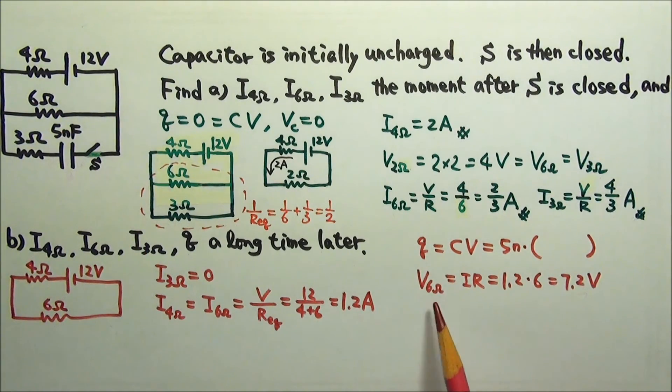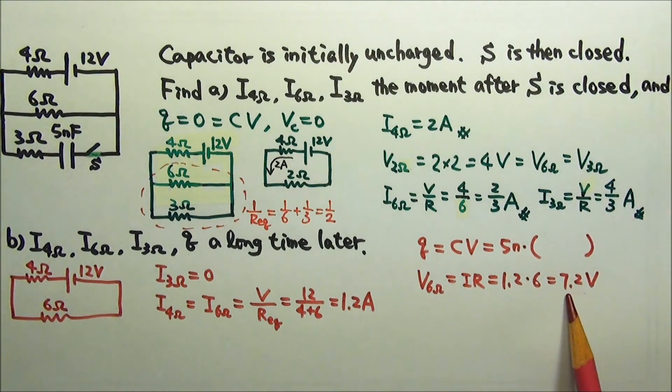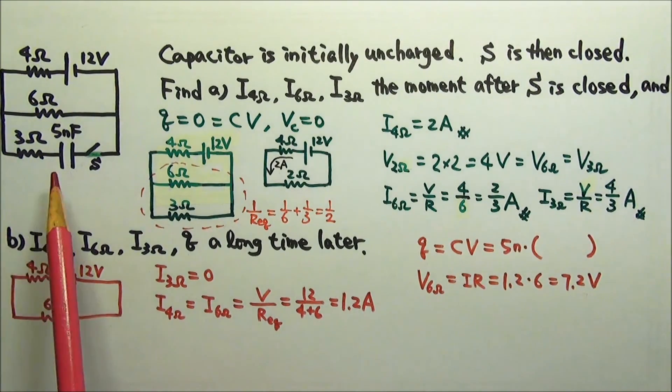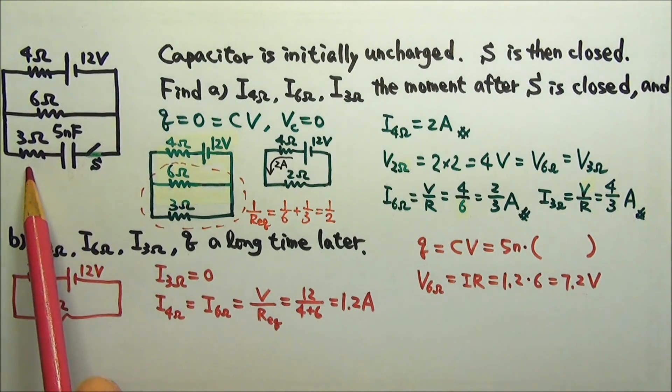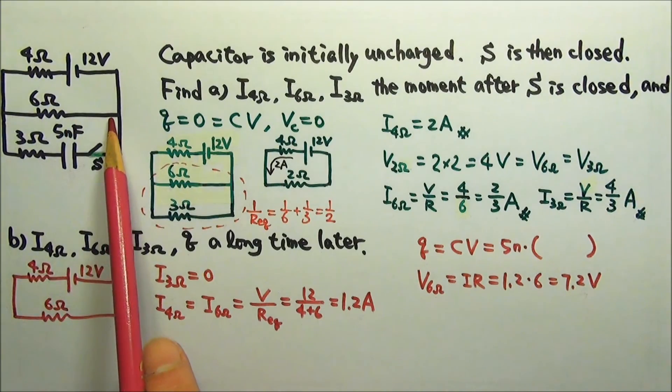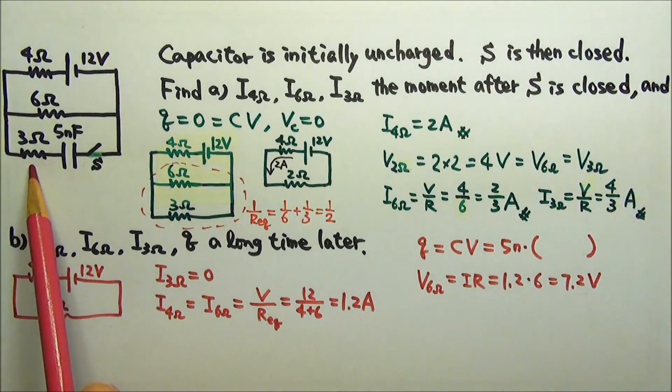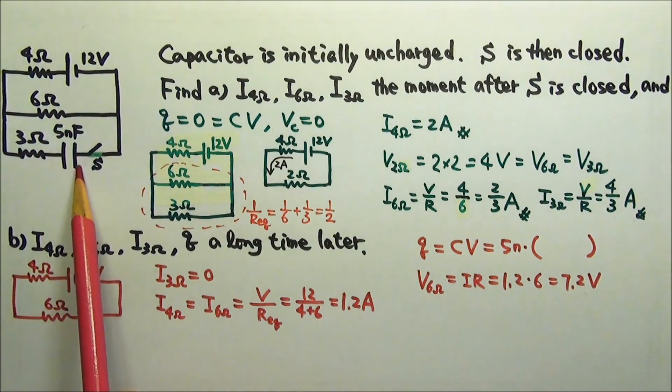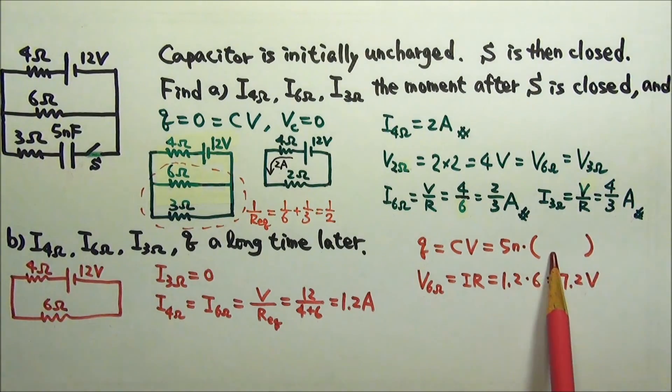The voltage across a resistor is I times R. The current is 1.2 amps, so we get 7.2 volts. Since the 5 nanofarad is in series with 3 ohms, together they share the 7.2 volts. But since this resistor gets no current, it gets no voltage. So all the 7.2 volts belongs to the capacitor.